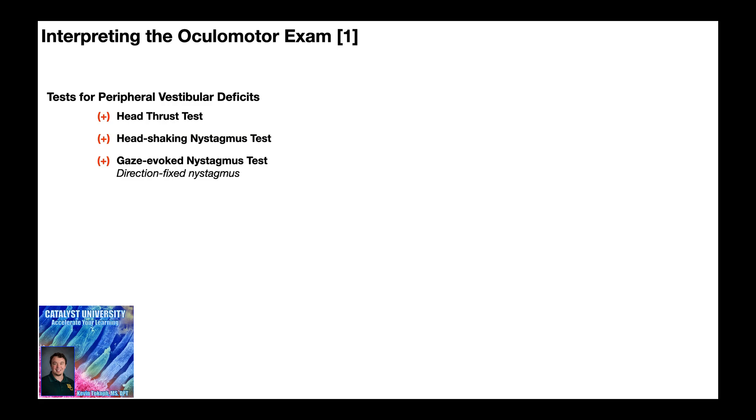Now remember that the gaze-evoked nystagmus test has two types of results that depend on the nature of the nystagmus. The direction-changing nystagmus is more indicative of a central deficit, but when it's direction-fixed, that's more indicative of a peripheral vestibular deficit.